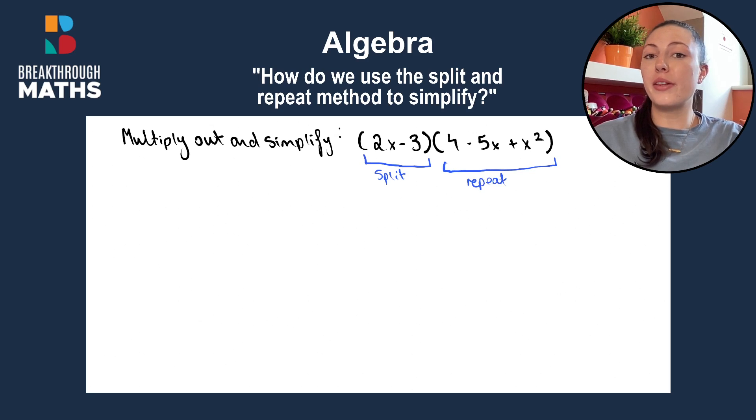Now, the reason that we are choosing the first bracket to split is because it has two terms. So we can split it exactly down the middle. So we have 2x and we have minus 3. But our second bracket has 3 terms, which means we can't split it exactly in half. Therefore, we choose this bracket to repeat and the one with 2 terms we choose to split.